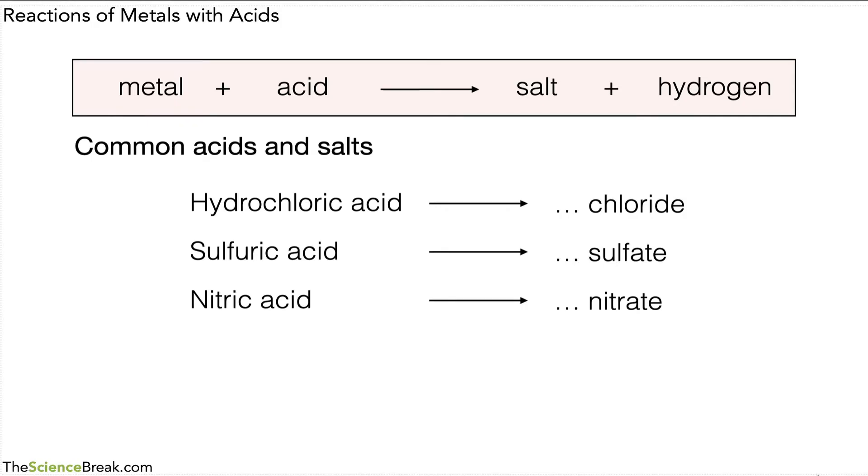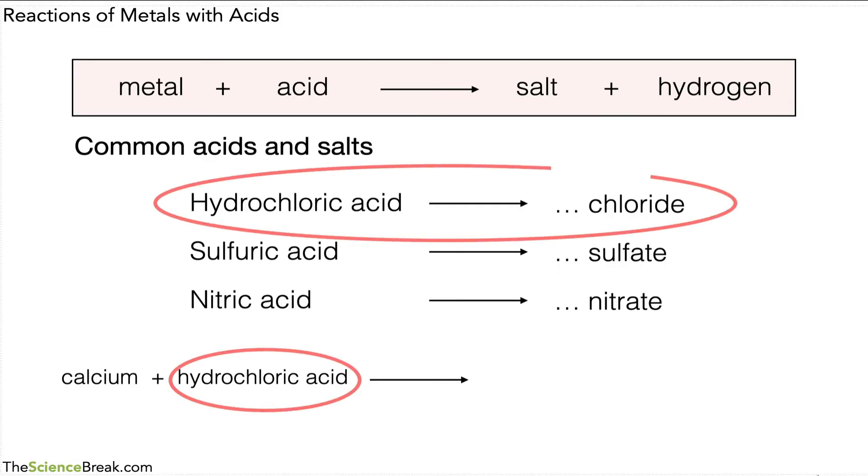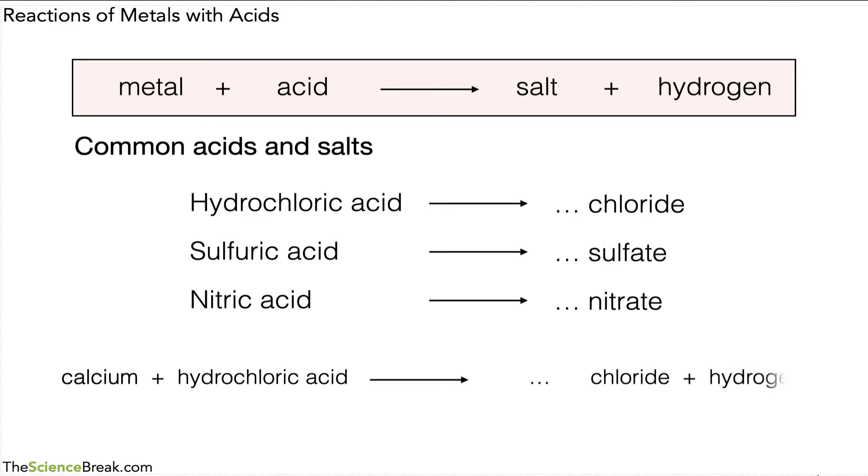Now how can we use this? Well, let's take a look at the example of reacting calcium metal with hydrochloric acid. Now using the information above the equation, we can see that hydrochloric acid will produce a salt that is a chloride salt. So we know a chloride salt is going to be produced and we know hydrogen gas is going to be produced, so we can add that to our equation: something chloride plus hydrogen.